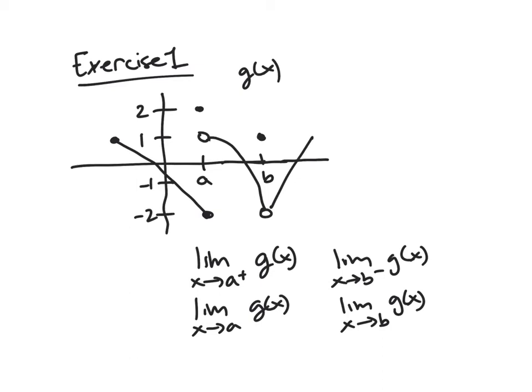So here's your first exercise. I've given you the graph of g(x) and the points A and B here, and so I want you to find these two one-sided limits and two two-sided limits for this function.